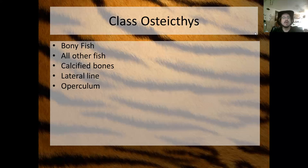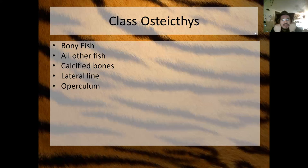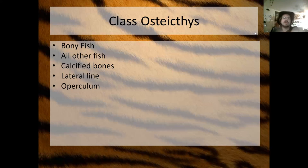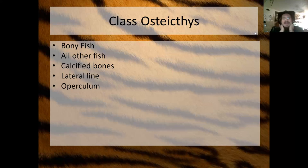Osteichthyes have what we call an operculum. The operculum is a protective plate that covers up the gills. It allows a fish to open or shut the covering for its gills. Fish take water in through their mouth, pass it across their gills, and then open their operculum to allow the water to flow past.